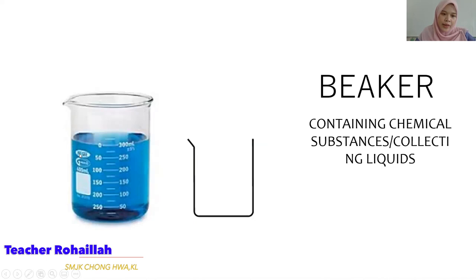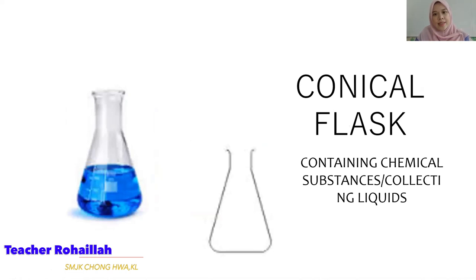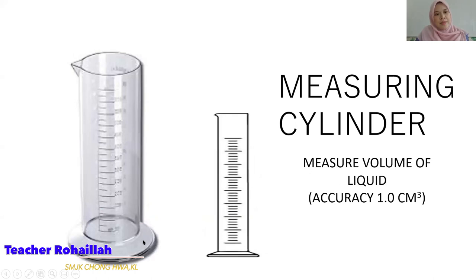Next: the beaker. This is the real beaker, and this is the symbol for it. For the beaker, you also put chemical substances or liquid inside, but the volume is much larger compared to the test tube. Next: the conical flask — this is the symbol for it. And then: the measuring cylinder. The difference is that the measuring cylinder has measurement markings on it — that is why the symbol shows the measurement scale.